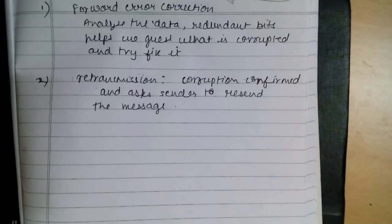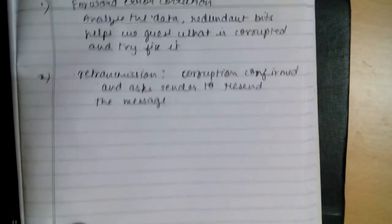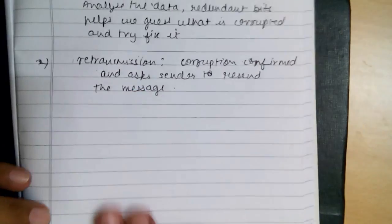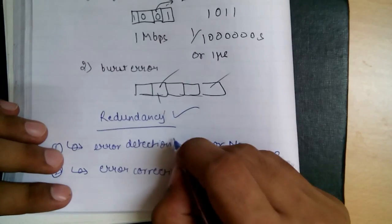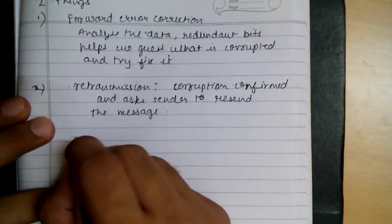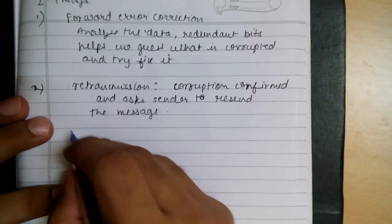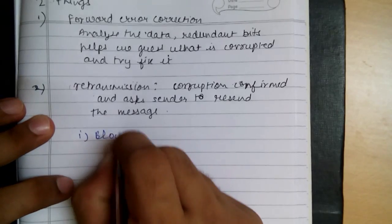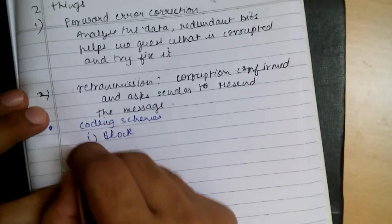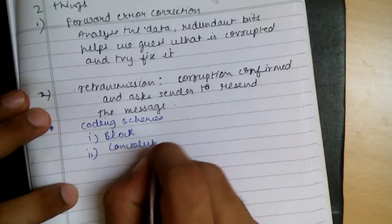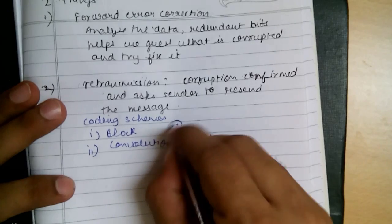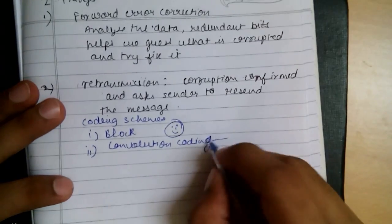The first step is to determine whether data is corrupted or not. The method is redundancy. For error detection, there are various coding schemes: the first is block coding and the second is convolutional coding. We are going to talk about block coding only, as convolutional coding is a much more advanced topic.